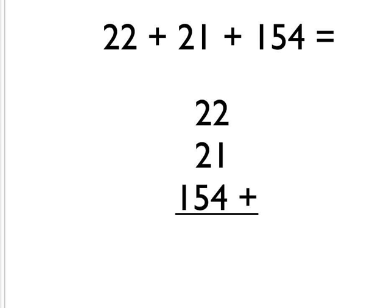And then simply add up each column. So 2 add 1 is 3, add the 4 is 7, so we put the 7 down there. 2 add 2 is 4, add 5 is 9, so we write the 9 there. In the hundreds column, we've just got the 1, so the total of that column is just 1. And our answer is 197.